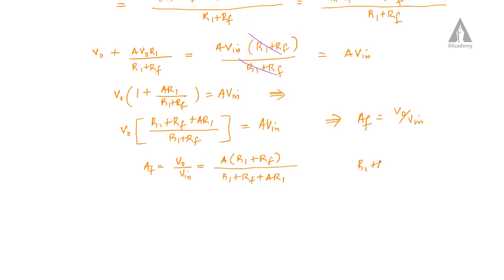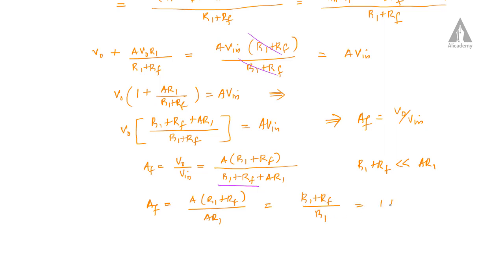Now if R1 plus RF is very much less than A·R1, we can approximate the closed-loop gain as A into (R1 plus RF) divided by R1. This simplifies to 1 plus RF divided by R1. So the closed-loop gain AF equals 1 plus RF by R1. This is the equation for the closed-loop gain of the non-inverting amplifier.